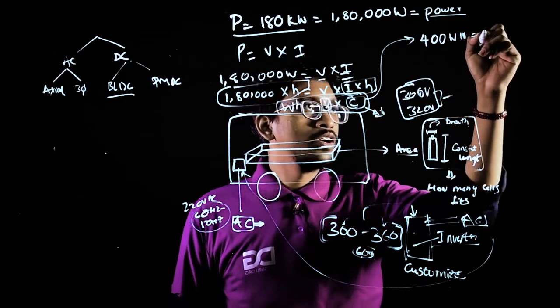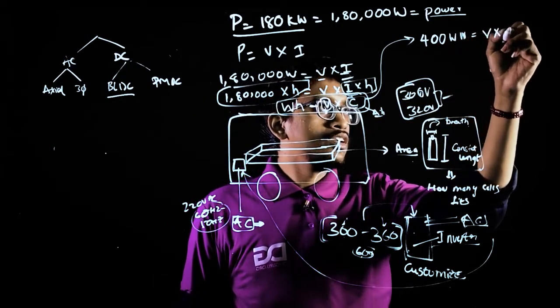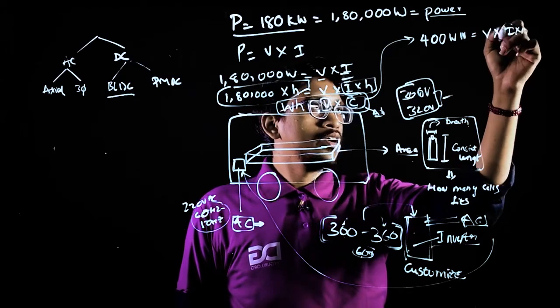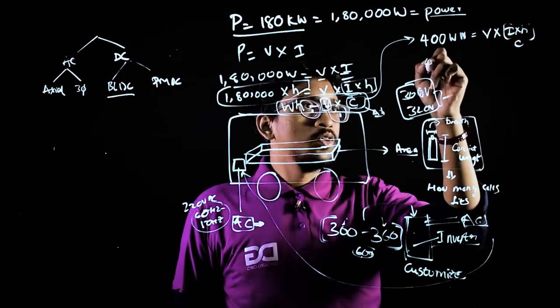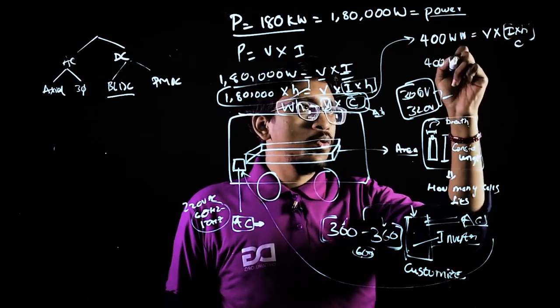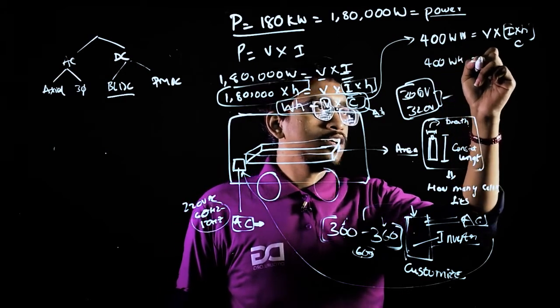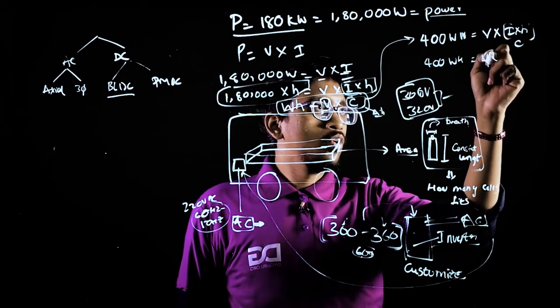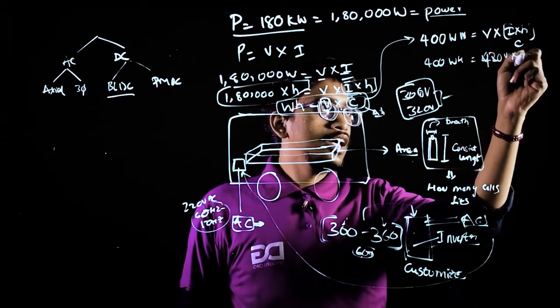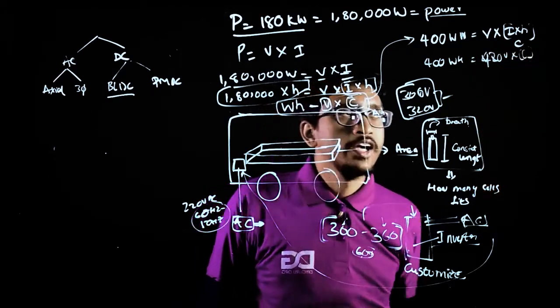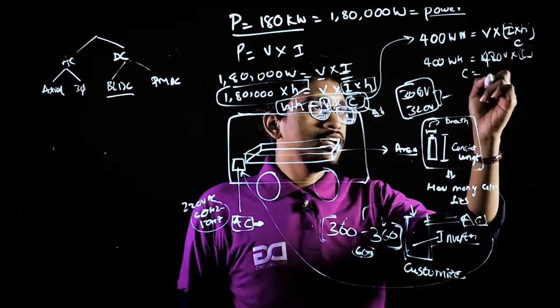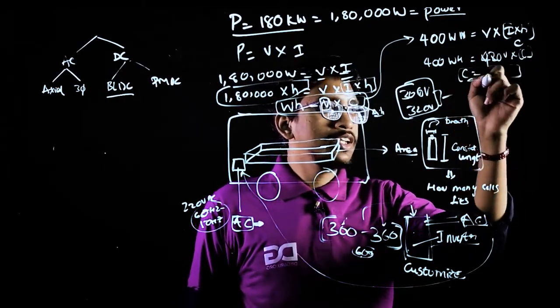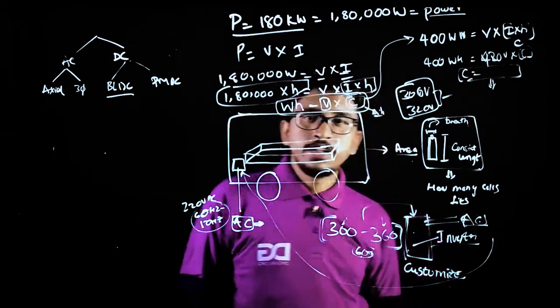So Tesla is having 400 kilowatt of motor and if you consider voltage into, this is a capacity. Now, 400 watt hour, it is also having a voltage of 420 volts of cells into capacity. So by this, he is actually driving his vehicle with this much of capacity. So this is how it works.